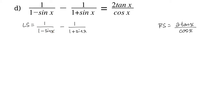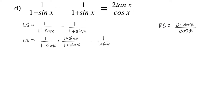We do not have the same denominator, so we need to make sure we have 1 minus sine x and 1 plus sine x in our denominator. For the first fraction we're going to multiply by 1 plus sine x over 1 plus sine x, both numerator and denominator. And our second fraction we need to multiply by 1 minus sine x over 1 minus sine x. This gives us a common denominator of 1 minus sine x times 1 plus sine x.